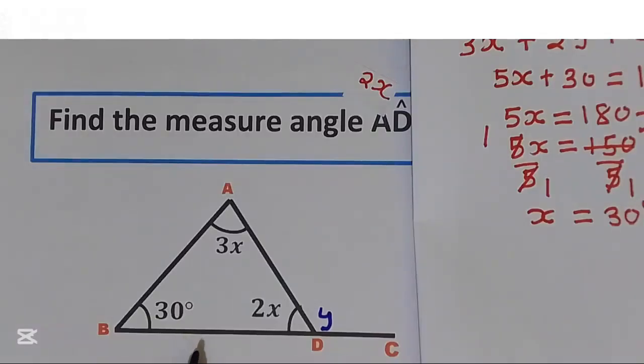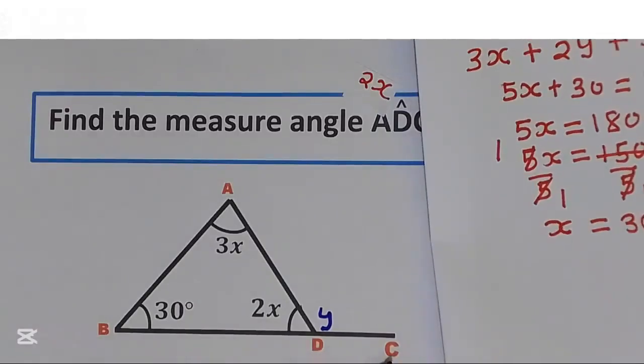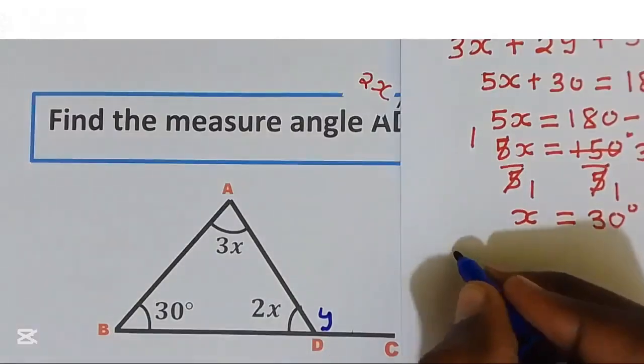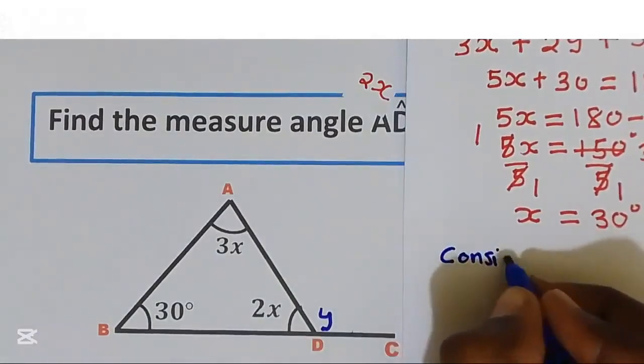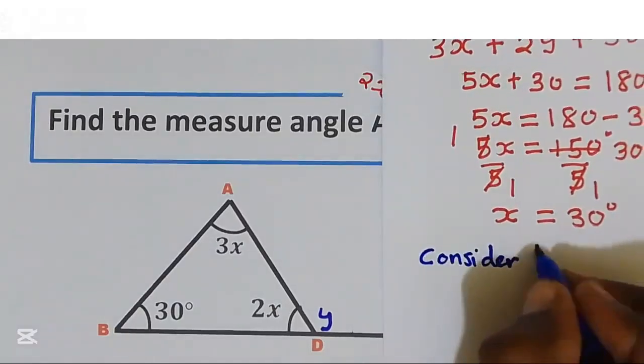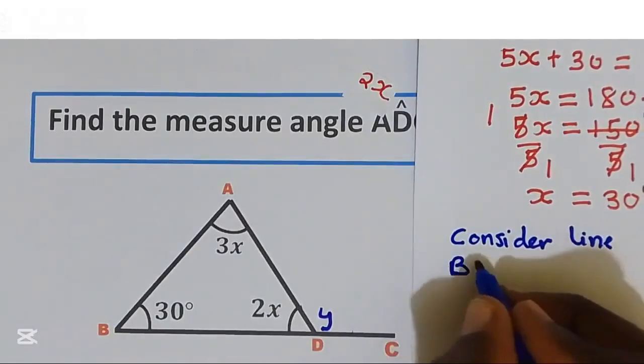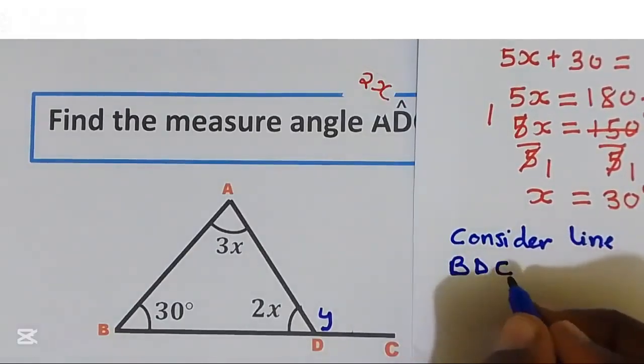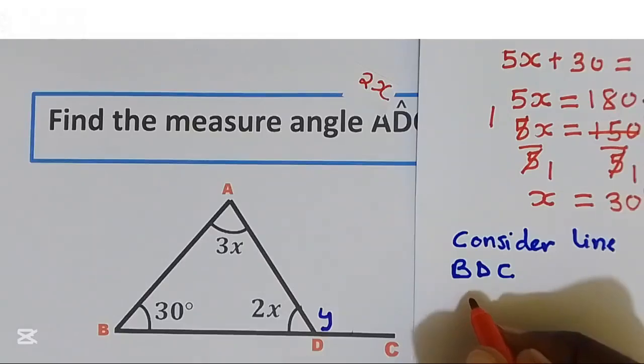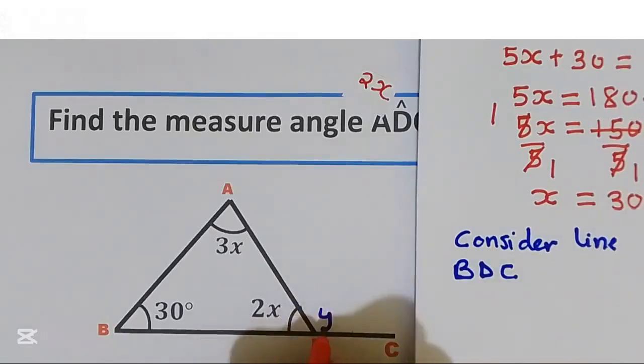Let us go back to our diagram. Line BDC is a straight line, so 2x plus y gives us a total of 180 degrees. Consider line BDC, it is a straight line. That is 2x plus y equal to 180.